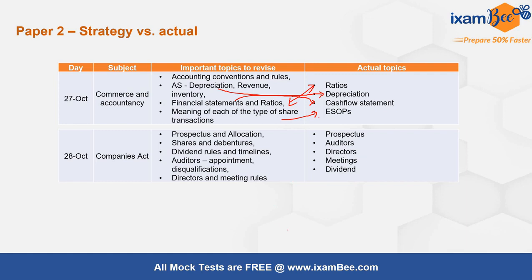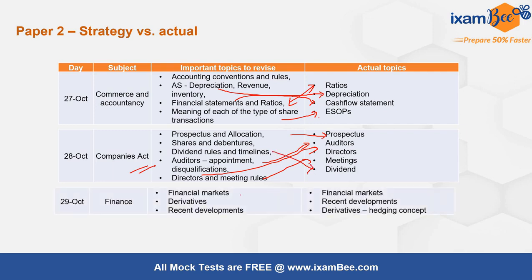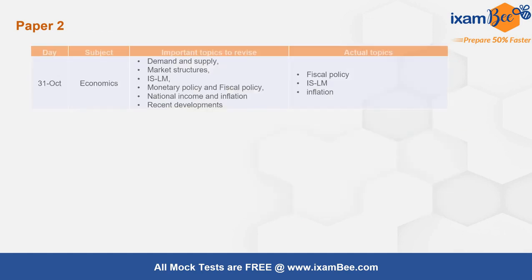In Companies Act, the most important areas were prospectuses — one question came from there — plus questions from auditors, directors, meeting-related rules, and dividends. For finance, direct questions came from financial markets, there was a concept of hedging related to derivatives, and some questions from recent developments.